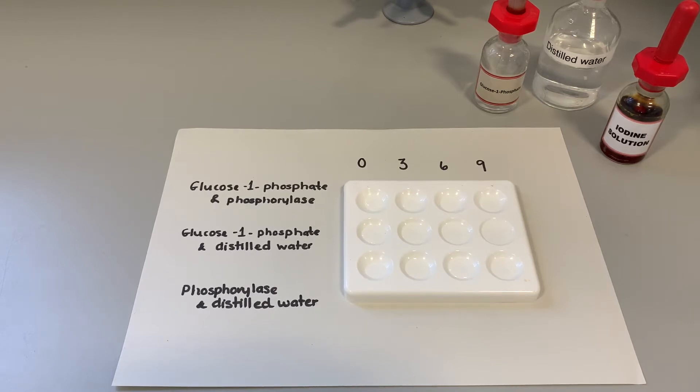So I've already set up some of this experiment. What I haven't added in yet is any of the actual enzyme phosphorylase. You can see that we've got three rows going. The first one is our glucose 1-phosphate and phosphorylase. That's the one that based on what we know we would expect starch to form.